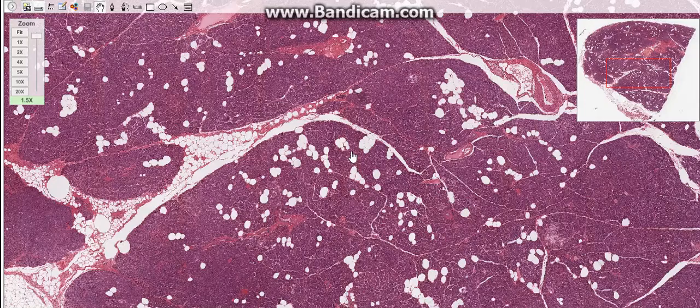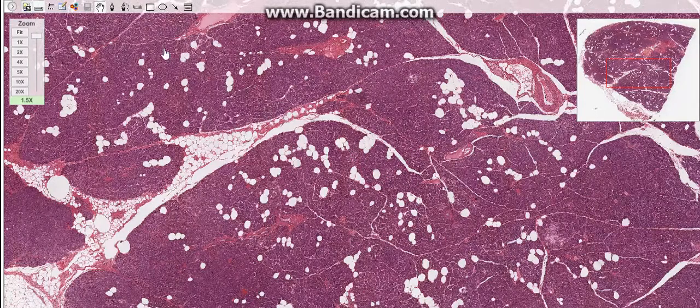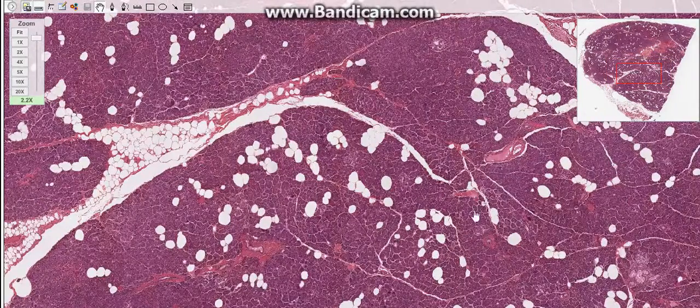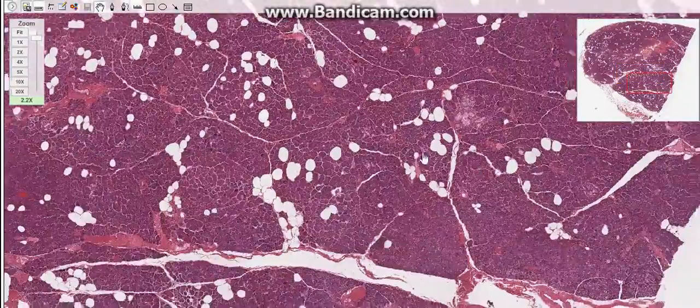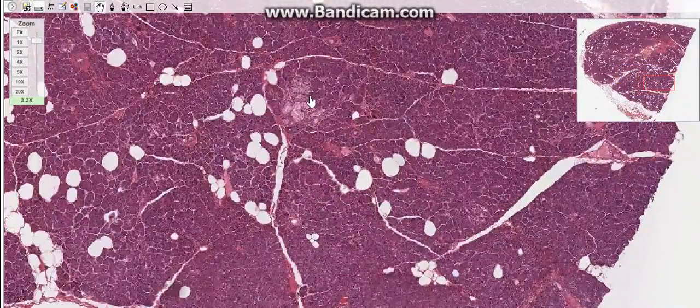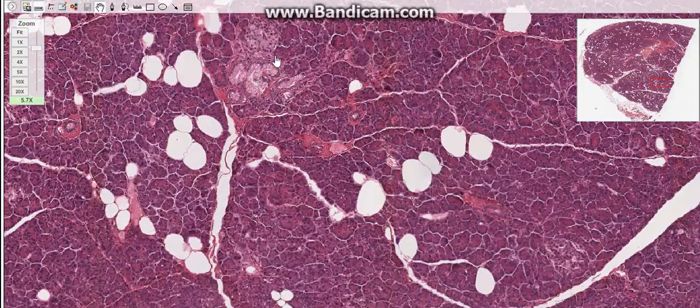The polygonal cells of the islets are arranged in short irregular cords that are profusely invested with a network of fenestrated capillaries. Each cell type of the islets can be correlated with a specific hormone and has a specific location in the islets.